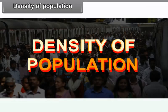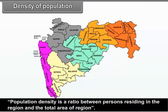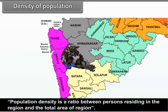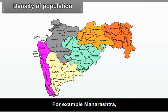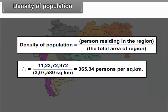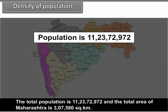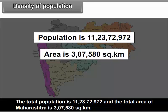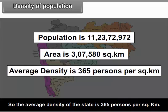7.1.1 Density of Population. Population density is a ratio between persons residing in a region and the total area of that region. For Maharashtra, density equals total population divided by total area: 11 crores 23 lakhs 72 thousand 972 divided by 3 lakh 7 thousand 580 square kilometers, which equals 365.34 persons per square kilometer. The total area of Maharashtra is 3,07,580 square kilometers.